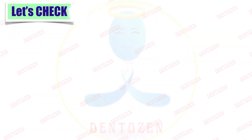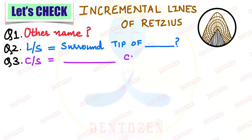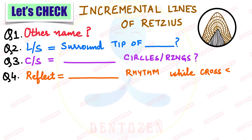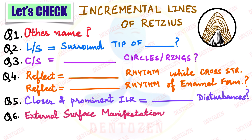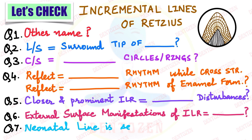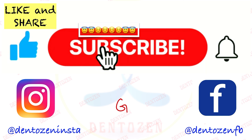Review questions: What is the other name for incremental lines of Retzius? In longitudinal section, they surround the tip of what structure? In cross section they appear as what type of rings? They reflect what type of rhythm, while cross striations reflect what type of rhythm? Where do we see closer and more prominent incremental lines? What are the external surface manifestations of these lines known as? And the neonatal line is seen between which two types of enamel?